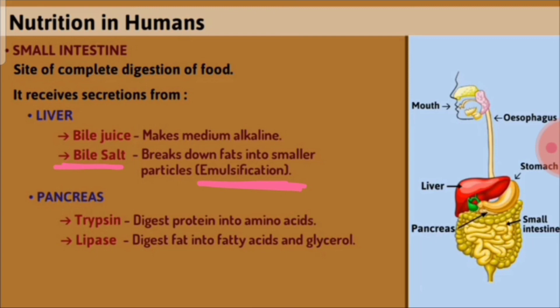The pancreas produces pancreatic juice that comes to the small intestine, containing two main enzymes: trypsin and lipase. Trypsin digests protein into amino acids, and lipase digests fat into fatty acids and glycerol.